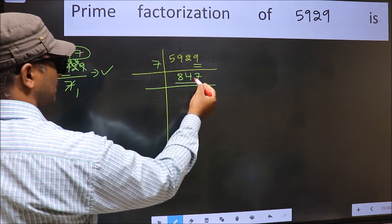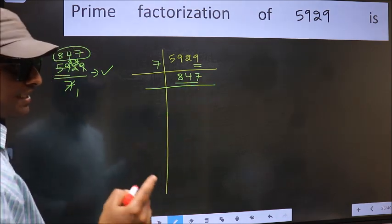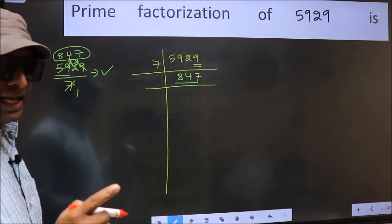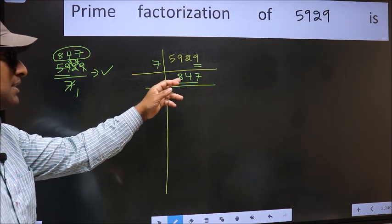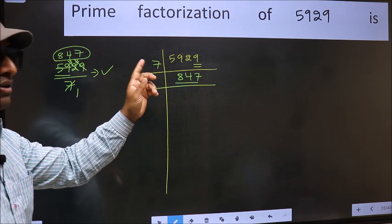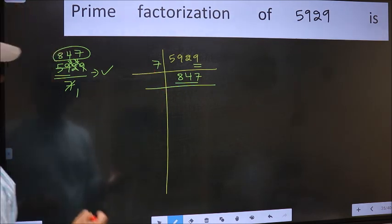Now for this number we don't need to check divisibility by 2, 3, or 5 as we had already checked before. So divisibility of this number, start checking from 7 onwards. So let us check.